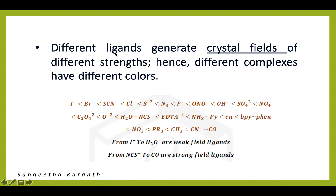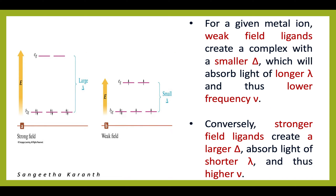The main factor that decides which color is imparted to a complex is the ligand. We have already discussed the spectrochemical series, where ligands are arranged according to the splitting they bring about. CO (carbonyl) is a strong field ligand, while water and ligands below it in the series are weak field ligands. Isothiocyanate and ligands above it belong to strong field ligands. If there is a strong field ligand, the splitting is higher, a higher energy photon is required, and the wavelength absorbed will be smaller.